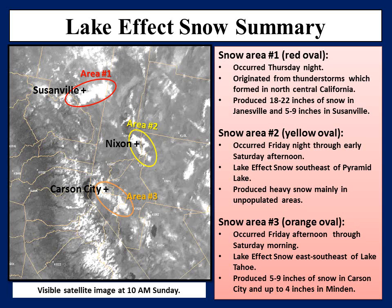What resulted from all of the conditions described was some significant lake effect snow across areas highlighted on the image. Highlighted in area number 2, lake effect snow developed southeast of Pyramid Lake and produced heavy snow mainly across unpopulated areas. From Friday afternoon through Saturday morning, lake effect snow developed east-southeast of Lake Tahoe and produced 5 to 9 inches of snow in Carson City and up to 4 inches in Minden, shown in area number 3. On Thursday night, thunderstorms formed in north-central California and strengthened to produce 18 to 22 inches of snow in Janesville and 5 to 9 inches in Susanville, highlighted in area number 1. Those snow showers were not a result of lake effect snow, but they show just how unstable the atmosphere was Thursday night through Saturday morning.